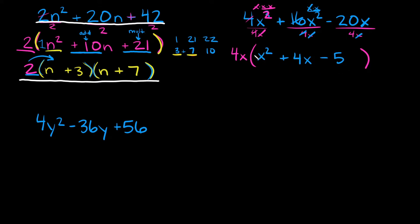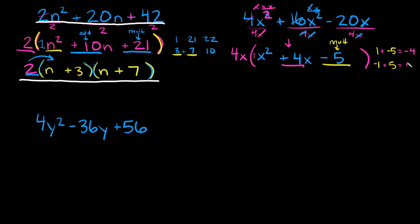So we're left with a quadratic that has a leading coefficient of 1 — x squared plus 4x minus 5. We can solve this the same way. Find two numbers that multiply to negative 5 and add up to positive 4. Since 5 is prime, the only pairs are 1 times negative 5, or negative 1 times positive 5. Now, 1 plus negative 5 is negative 4, but negative 1 plus 5 is positive 4 — that's what we're looking for. So the two numbers are negative 1 and positive 5.